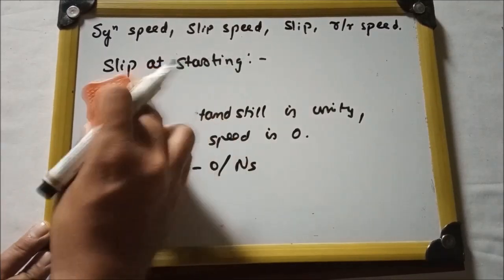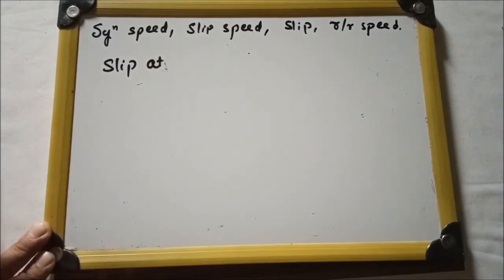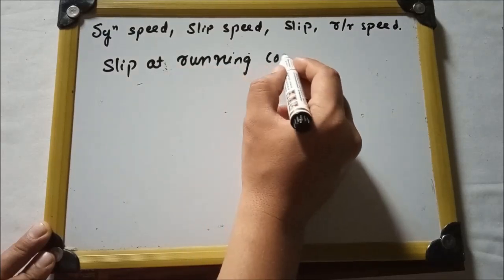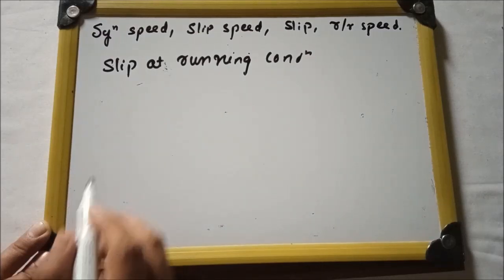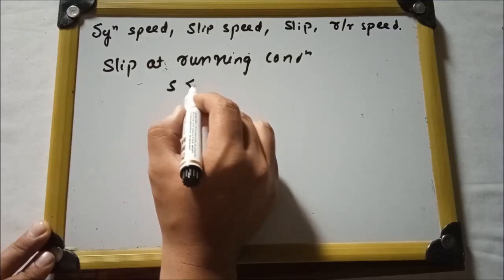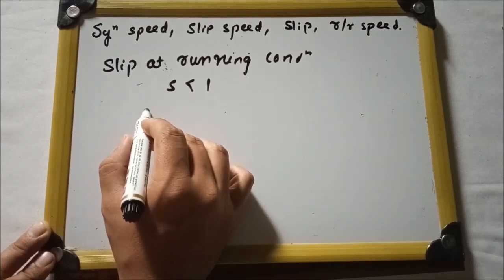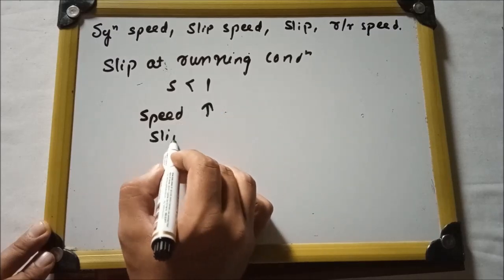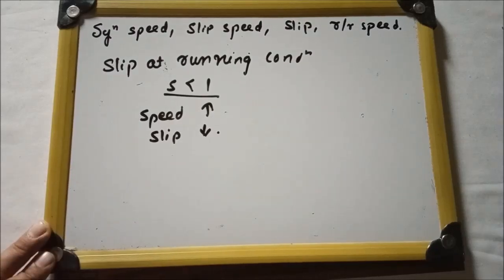Now, what will be the slip at the running condition? At the running condition, slip will always be less than unity, because in an induction motor, as speed increases, slip decreases. So the value of slip will always be less than 1.